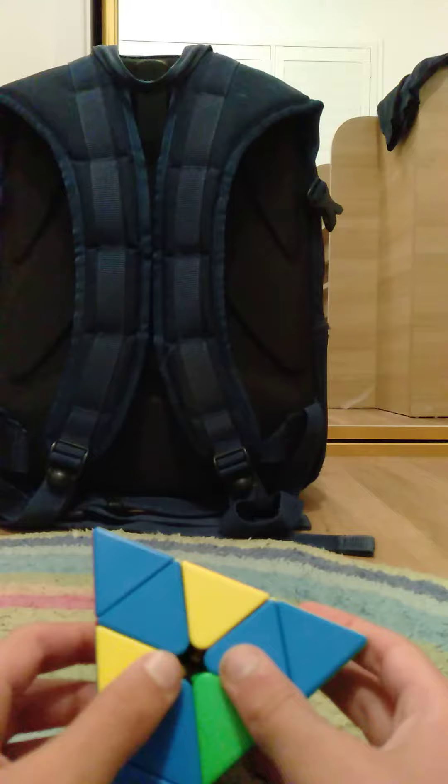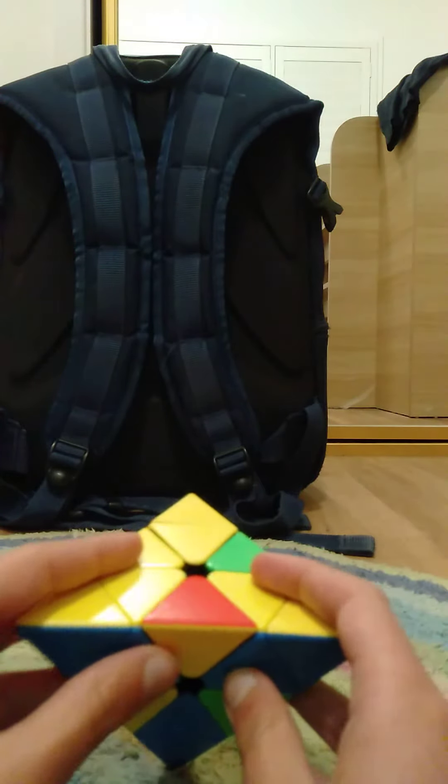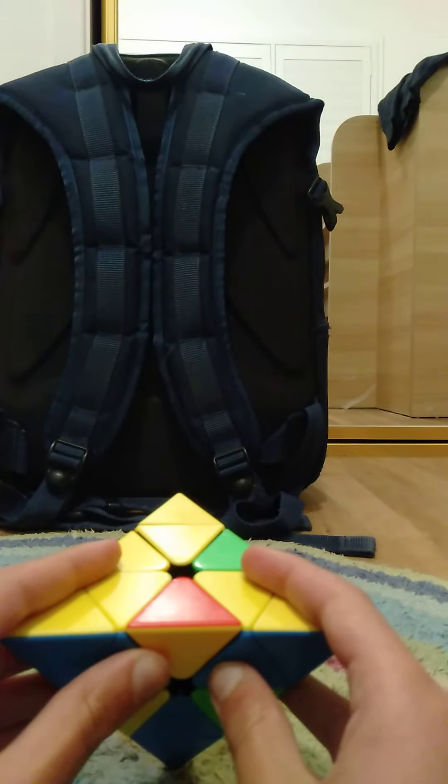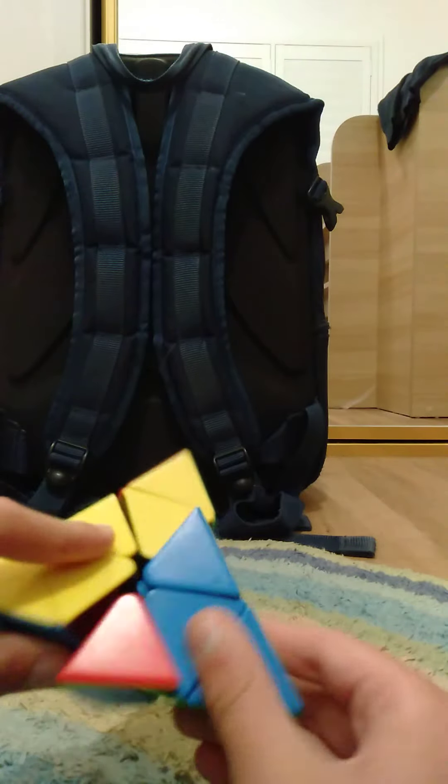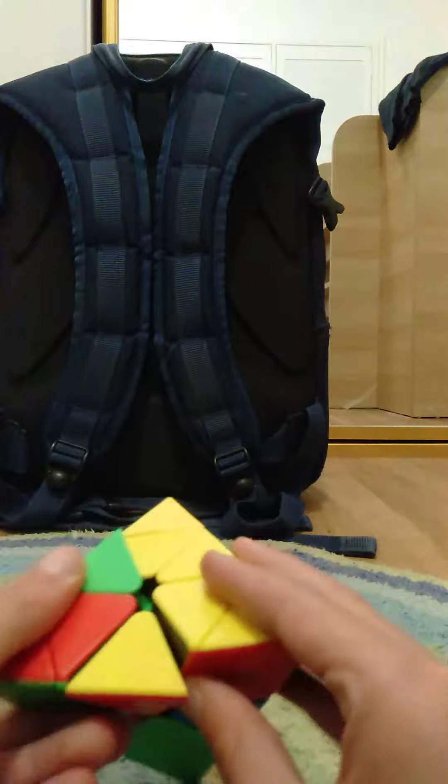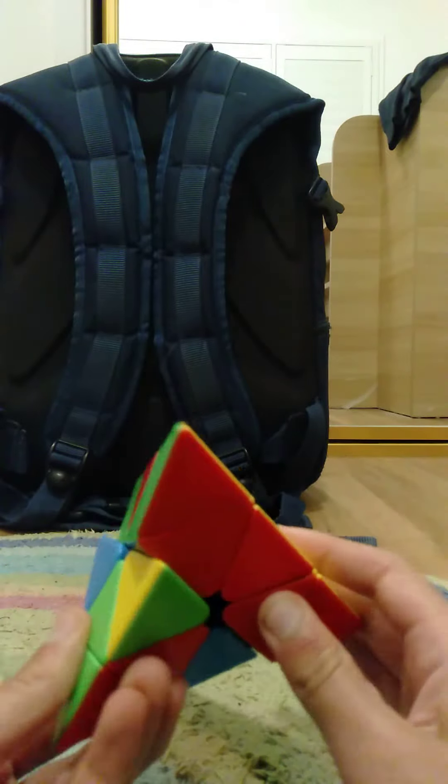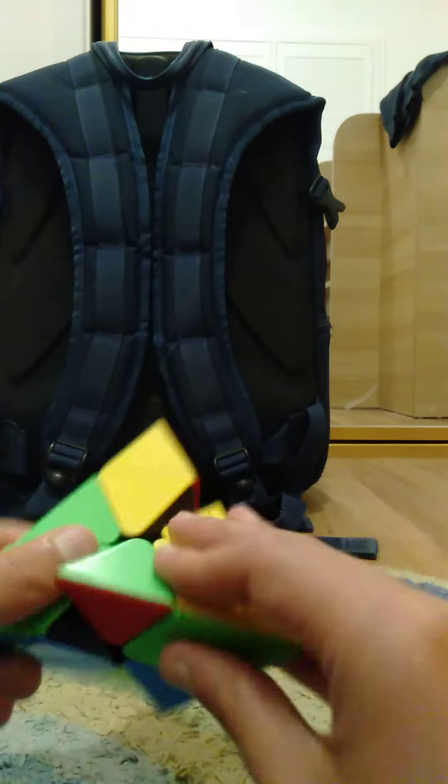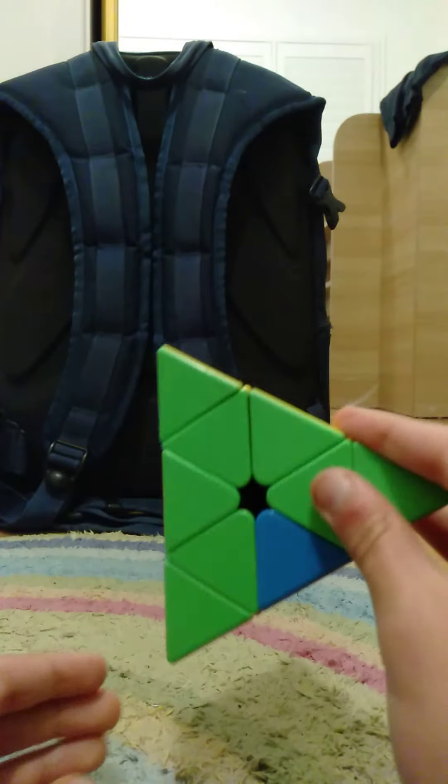Okay, so the first thing you want to do is pair the edges together like this. Notice how green there, blue there, and red there. Simple. It may look hard, but it's easy.